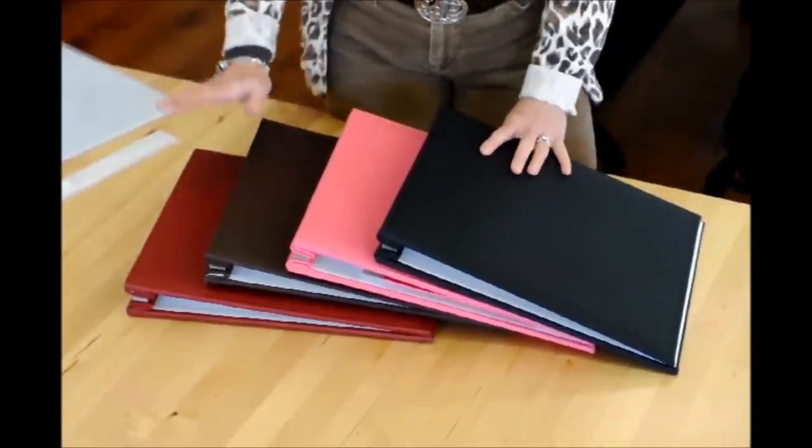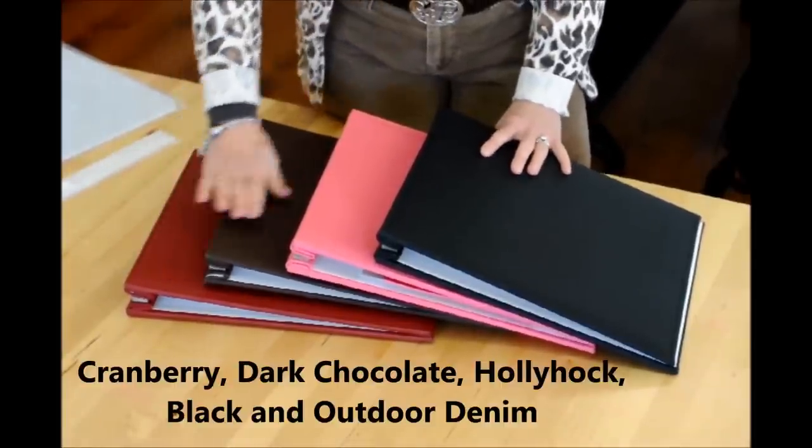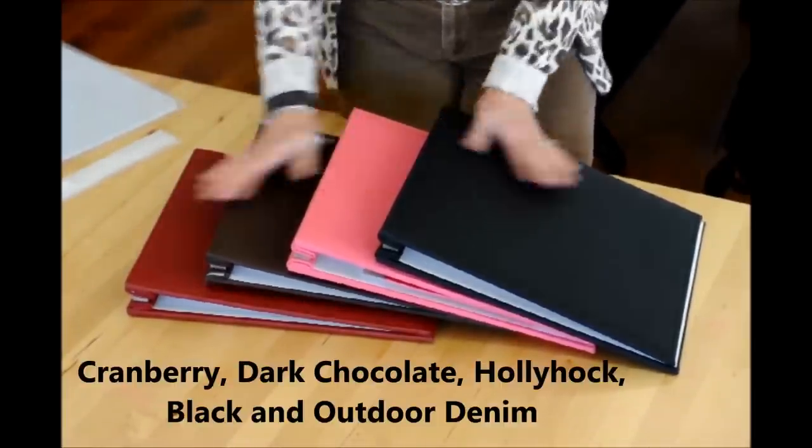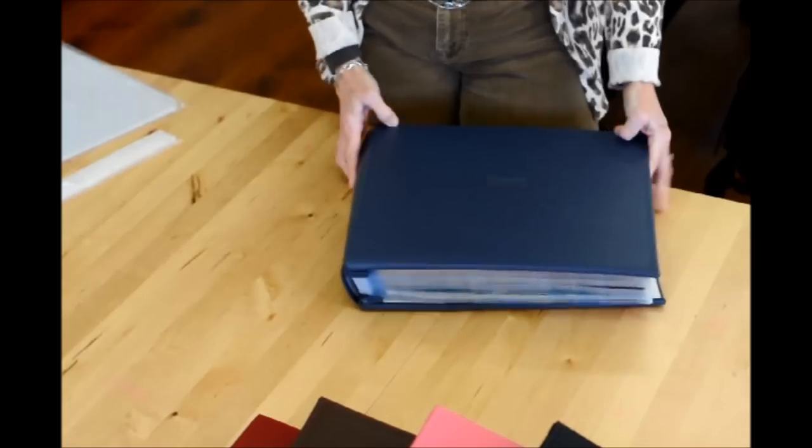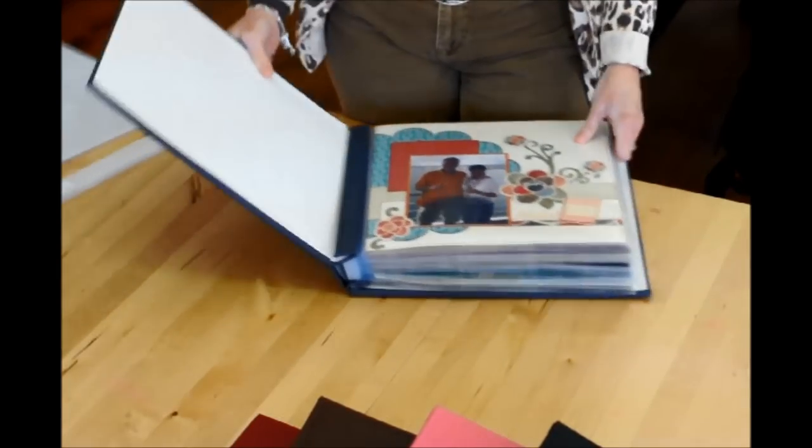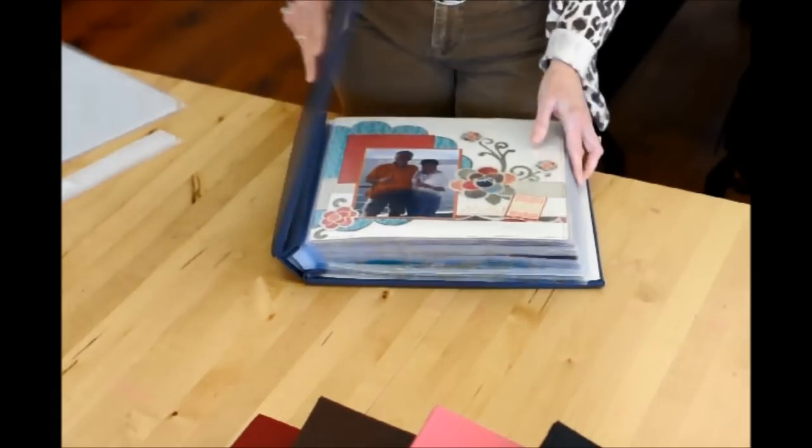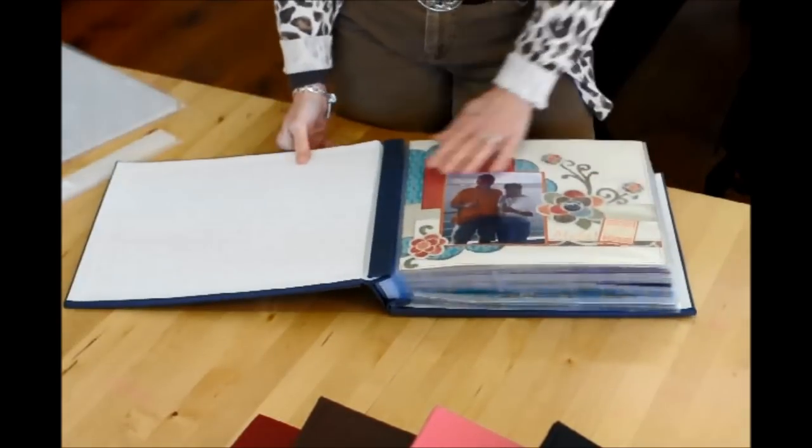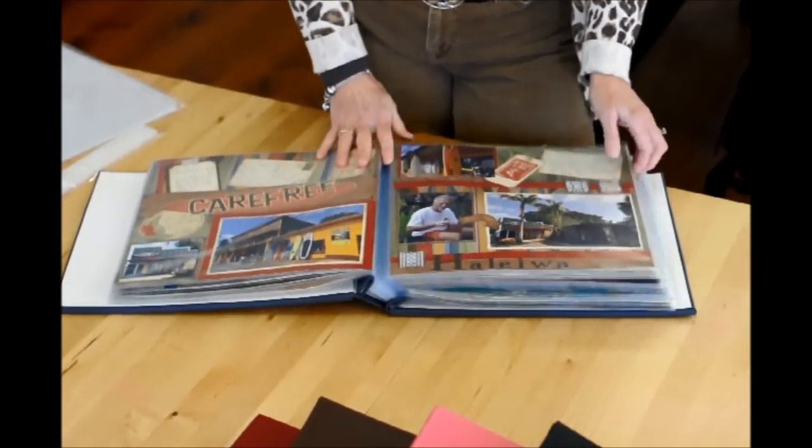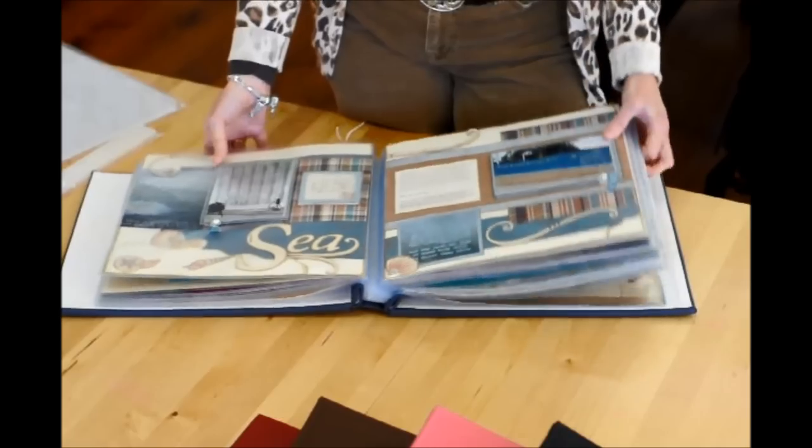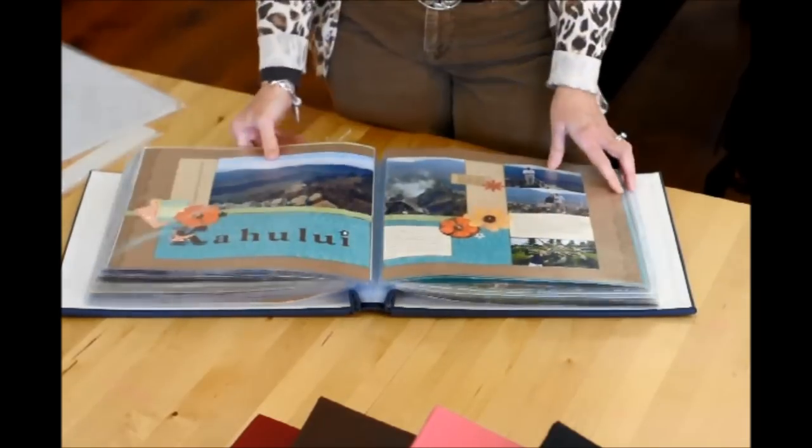These books come in five colors. We have Cranberry, Dark Chocolate, Hollyhock and Black, and one that's very popular is our Outdoor Denim, which is a beautiful book. I wanted to show you that I have about 25 to 30 page protectors in here, and I'm going to talk about our page protectors and why our books do lie flat, so we can show you how to put it together, so yours could look something like this.